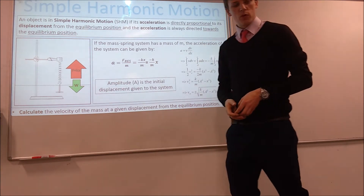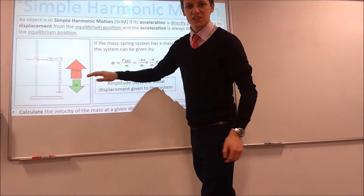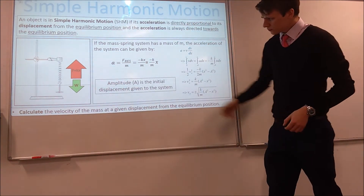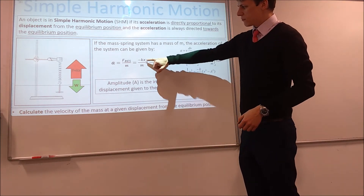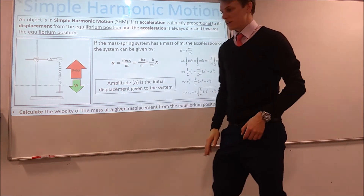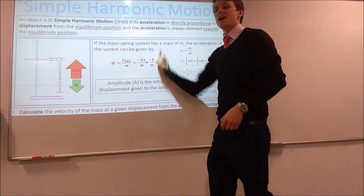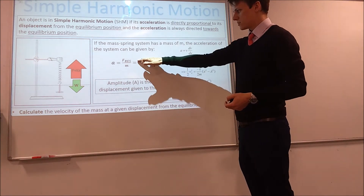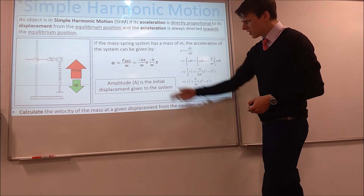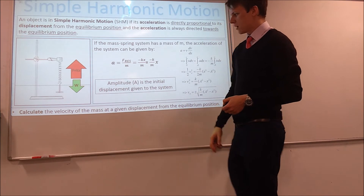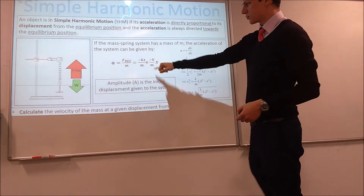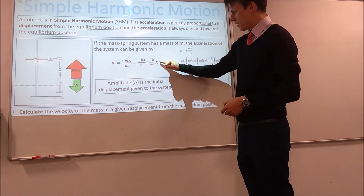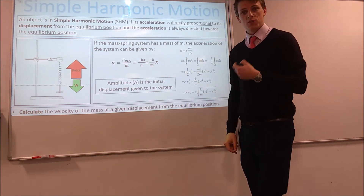We're going to take the example of displacing the object downwards, so we know the resultant force is directed upwards. If we define the downwards direction as positive, the resultant force is negative — in the upwards direction — and equal to kx, so the resultant force is minus kx. If we divide resultant force by mass, we get acceleration. So we can get an expression for acceleration in terms of the spring constant, the mass of the system, and the displacement from the equilibrium position.